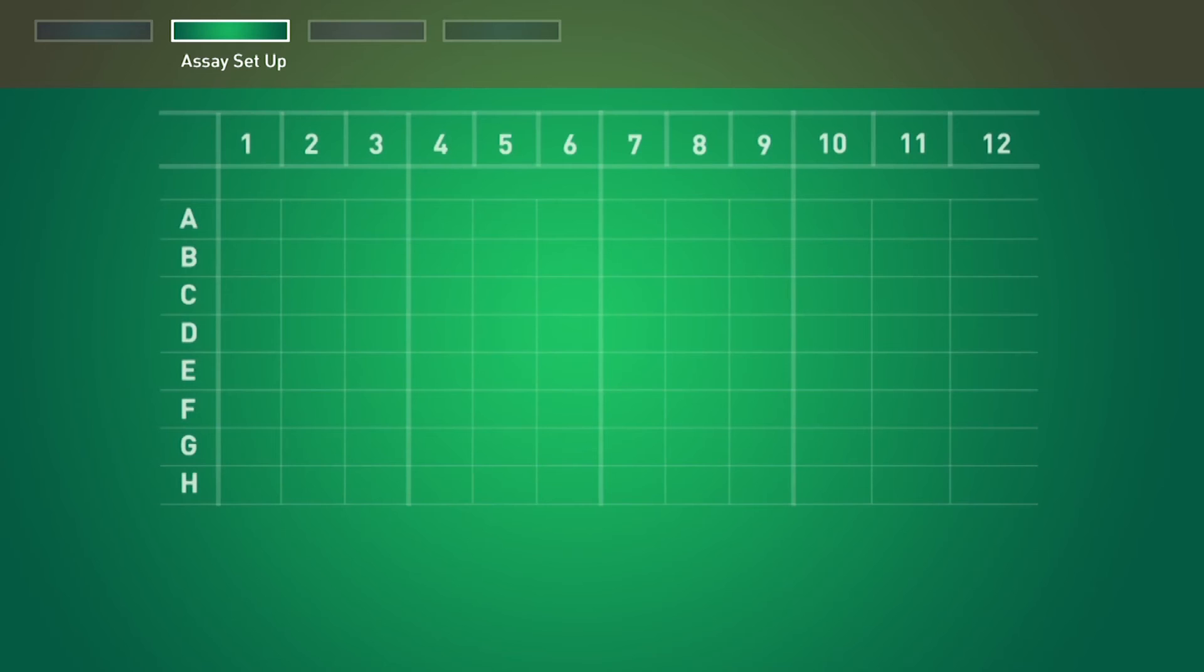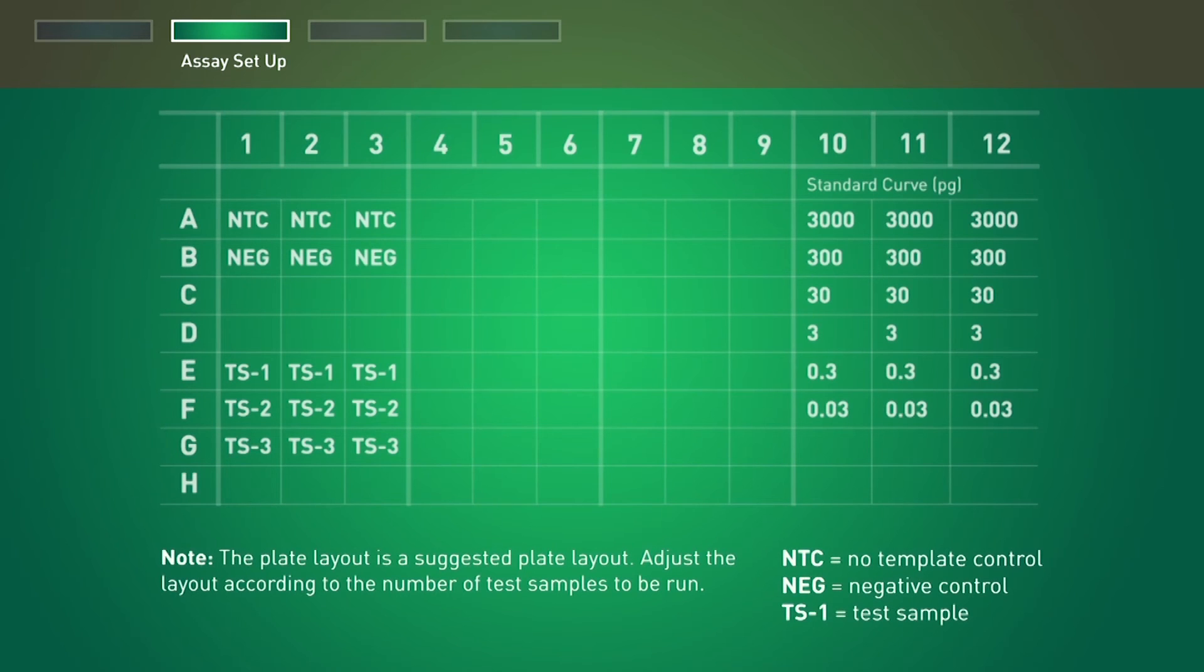First, set up a 96-well PCR reaction plate using this example plate layout. Adjust this layout according to the number of test samples to be run.